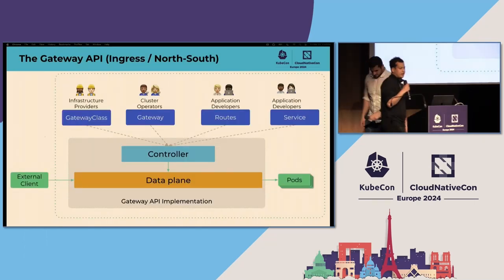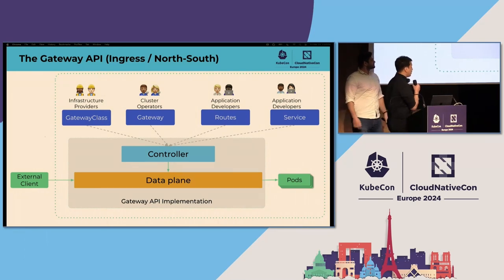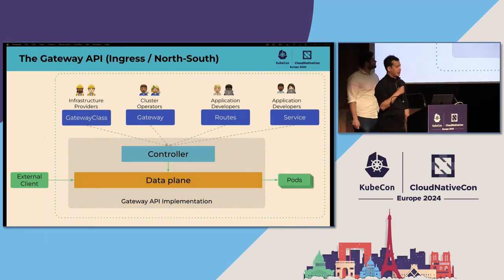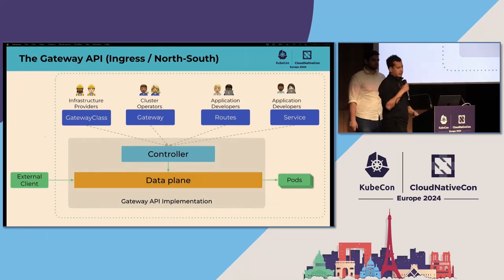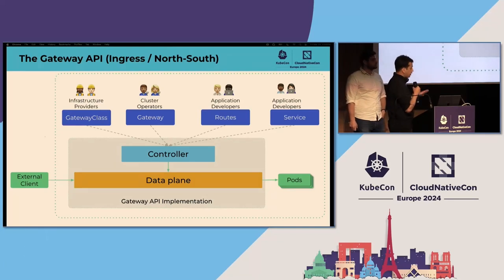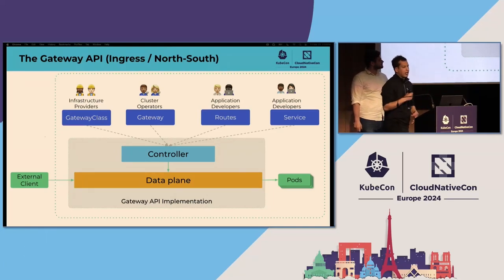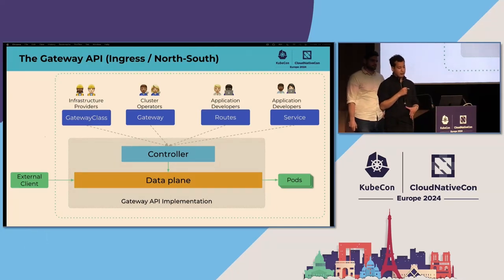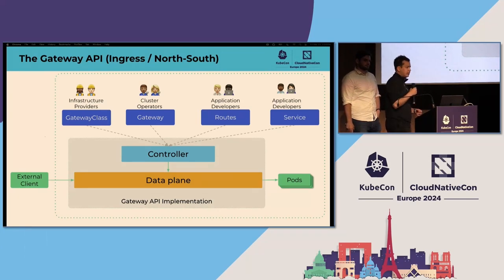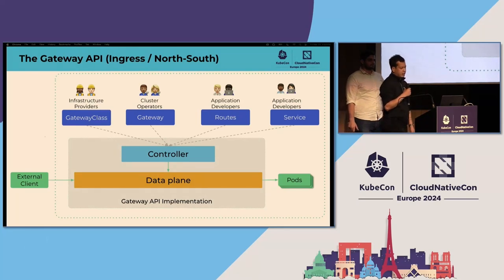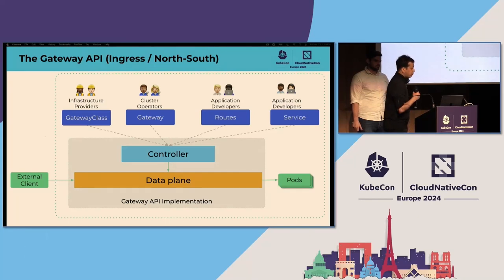Here's a brief introduction on the Gateway API. The Gateway API is a Kubernetes project that started in 2019 that focuses on layer 4 and layer 7 routing. These are APIs that require an implementation to be installed in the cluster that can consume these APIs and implement the routing behavior defined in the API. It's a successor to the Ingress API, which focuses on exposing a service inside Kubernetes to the outside world. As the next generation of Ingress, the Gateway API has managed to make many improvements. It supports multiple protocols such as HTTP, TCP, UDP, and gRPC.